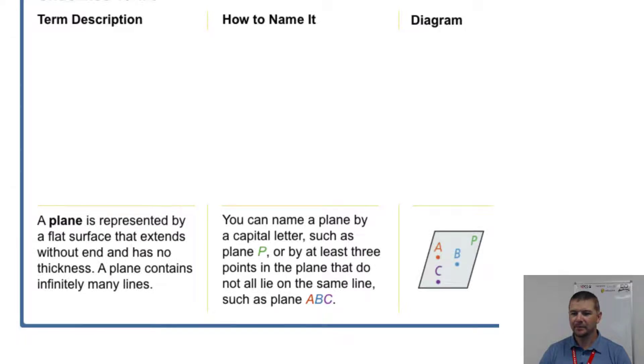And a diagram: here we see the plane ABC which we could also call plane BAC, plane CBA, or any combination of those three non-collinear points. We can see it's also labeled plane P.